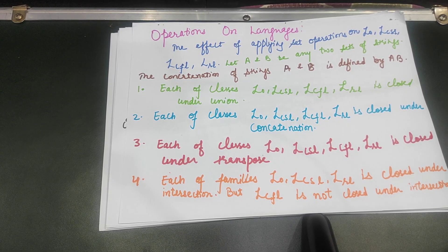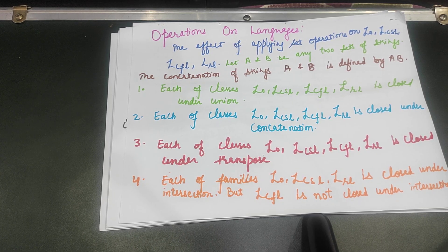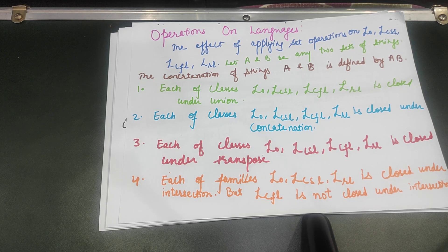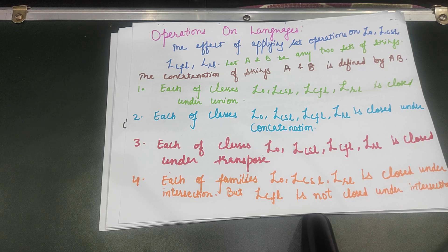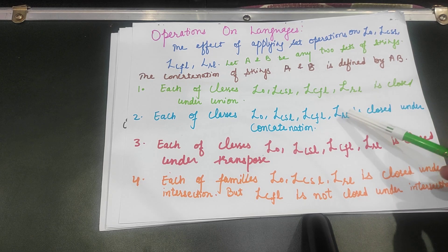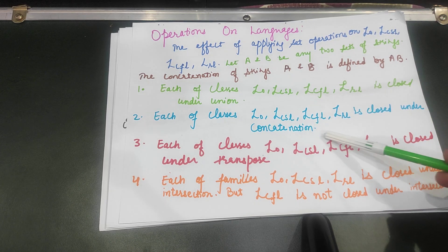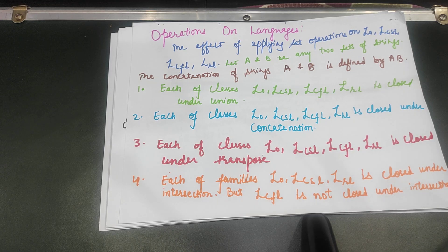According to this, we have four classes: Type-0, Context-Sensitive (Type-1), Context-Free (Type-2), and Regular (Type-3). The first operation is Union. Union means all elements of one set are combined with the elements of the second set without any repetition. All four language classes — Type-0, Context-Sensitive, Context-Free, and Regular — are closed under Union.